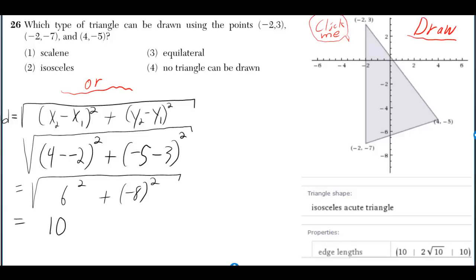Which type of triangle can be drawn using the points (-2, 3), (-2, -7), and (4, -5)?